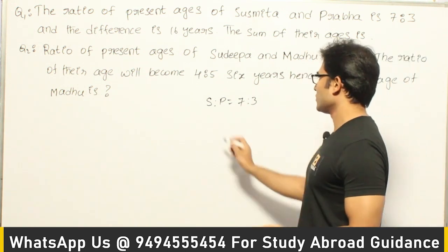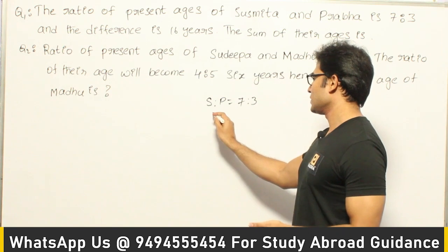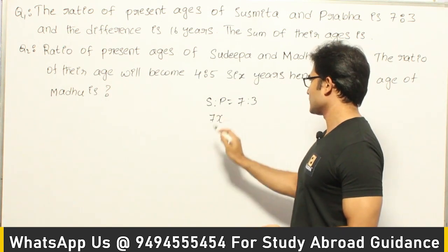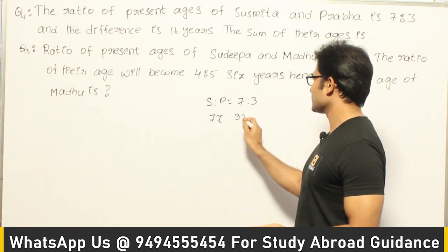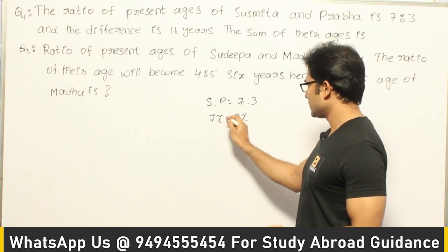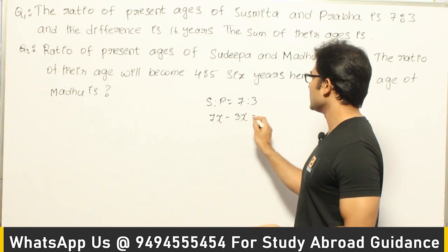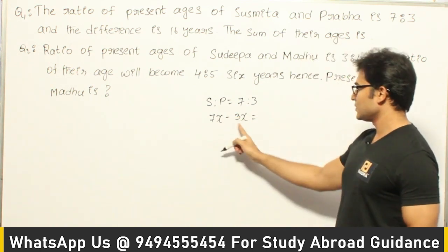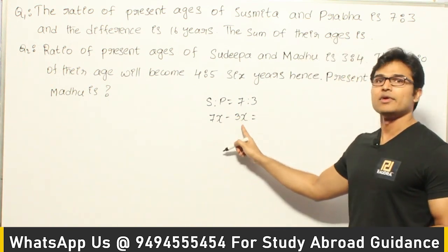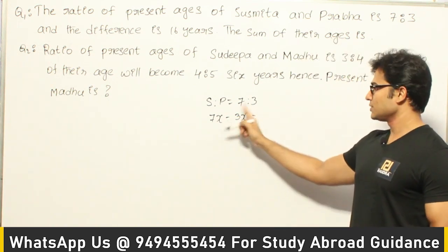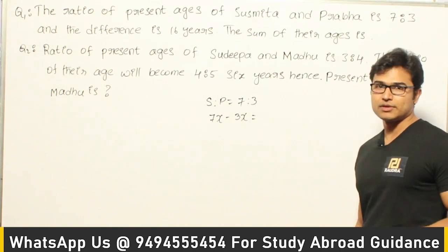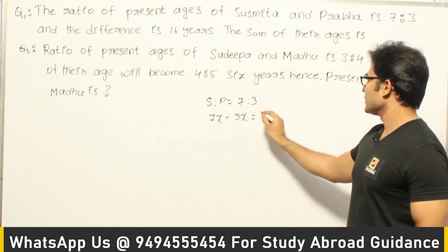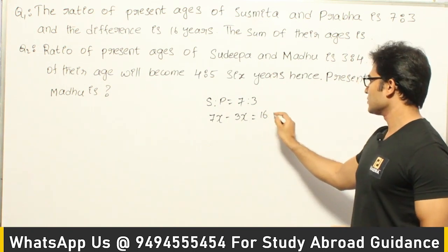What you can find out is: assume that Sushmita's age is 7x and Prabha's age is 3x. Can we assume 7x and 3x? Yes, because the ratio is still 7 is to 3. And they are saying that the difference is 16.